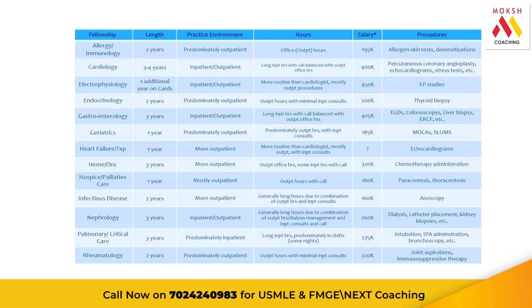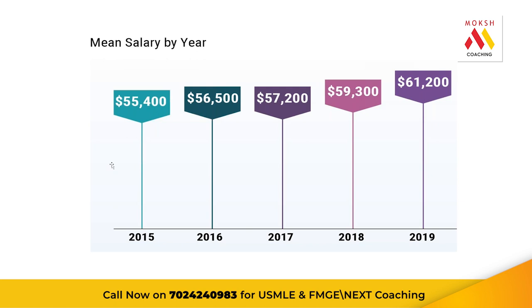On the other hand, geriatrics — the salary is much less, usually around $200k. You do a one-year fellowship and it's predominantly outpatient. If something happens to the elderly patient, they go straight to the emergency room, but you'll be pretty much working in outpatient areas. I don't want to go through all specialties, but just to give you an idea — now let's get into the mean salary as a resident.